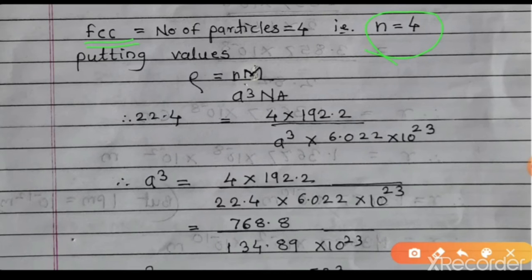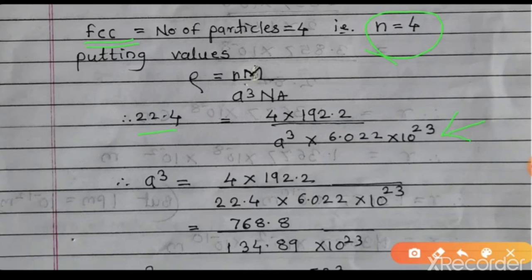Substituting values: 22.4 = (4 × 192.2) / (a³ × 6.022 × 10²³). Therefore a³ = (4 × 192.2) / (22.4 × 6.022 × 10²³) = 768.8 / (134.89 × 10²³).